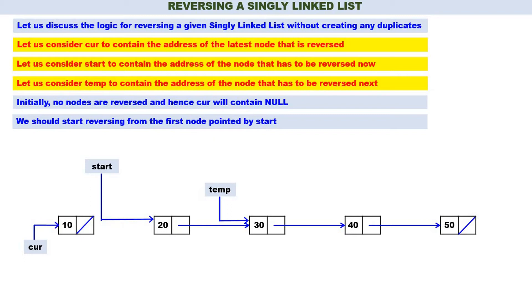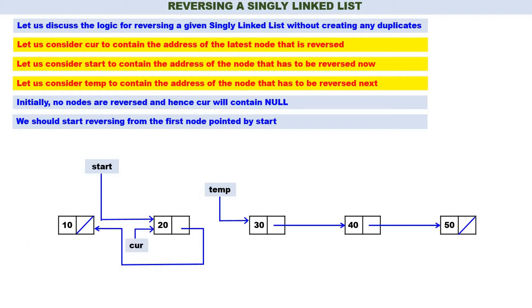Let us reverse 20 now. The address part of node 20 should contain the address of node 10. That is, start->next is equal to curr. So 20 is also reversed. Now, what is the node that is reversed recently? 20. Therefore curr should contain the address of 20 — that is, curr is equal to start.